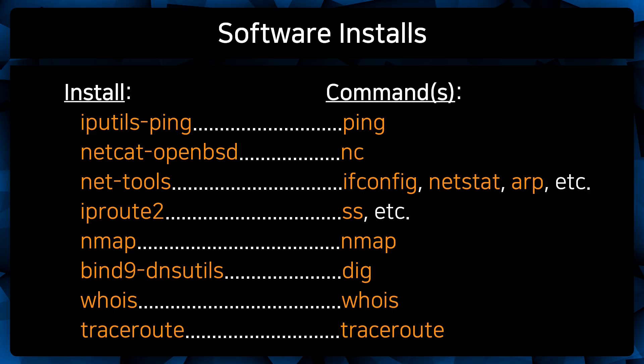Here I have listed the installs for the commands we will be using. First, we have iputils-ping, which will give us the ping command. After that, we have netcat-openbsd, which will give us the nc command. Then we have net-tools, which will give us multiple commands — for this video we will just be using the ifconfig command. Next, we have the iproute2 package, which for our purposes we will just be using the ss command. After that, we have nmap. Then we have bind9-dnsutils, which will give us the dig command. Then we have whois, which will give us the whois command. And finally, we have traceroute, which will give us the traceroute command.